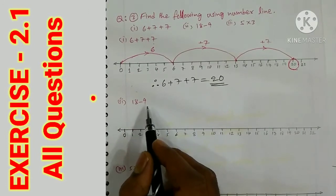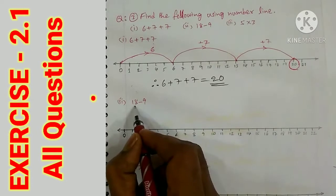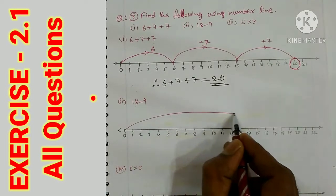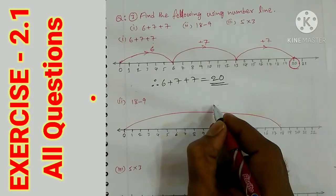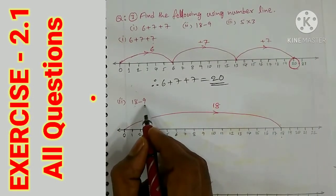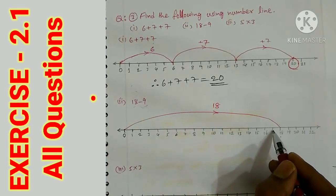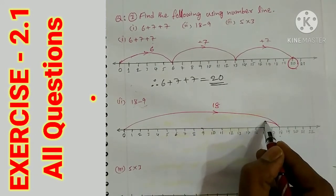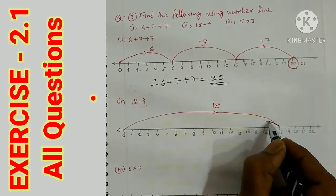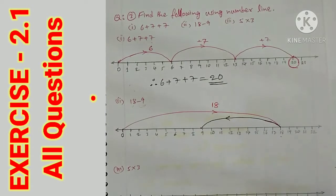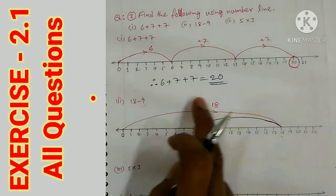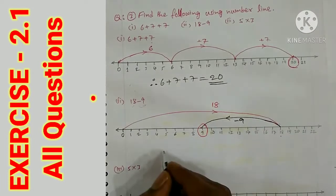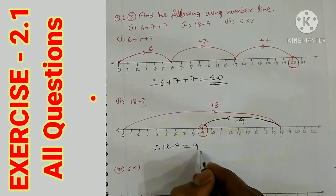Next is subtraction: 18 − 9. First take the number 18 on the number line. From 18, remove 9 — that means count 9 steps to the left. Therefore 18 − 9 = 9 is the answer.